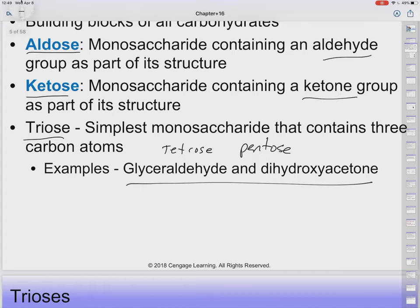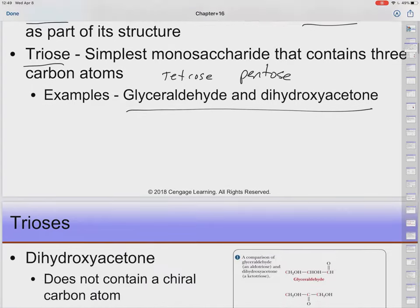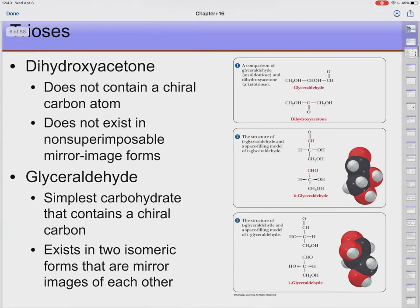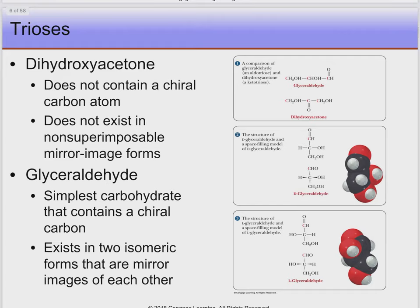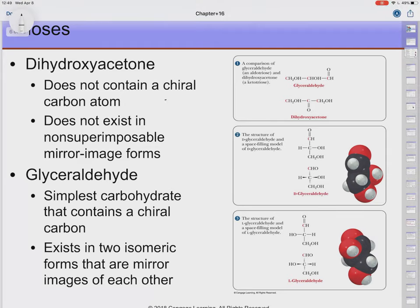Glyceraldehyde and dihydroxyacetone are two examples of trioses. Dihydroxyacetone has no chiral carbon, so it has no stereoisomers. Glyceraldehyde is the simplest carbohydrate that does have a chiral carbon. With one chiral carbon, we get two forms: D-glyceraldehyde and L-glyceraldehyde. In organic chemistry we assign priorities and determine clockwise or counterclockwise arrangement, but here we'll use Fischer projections instead.